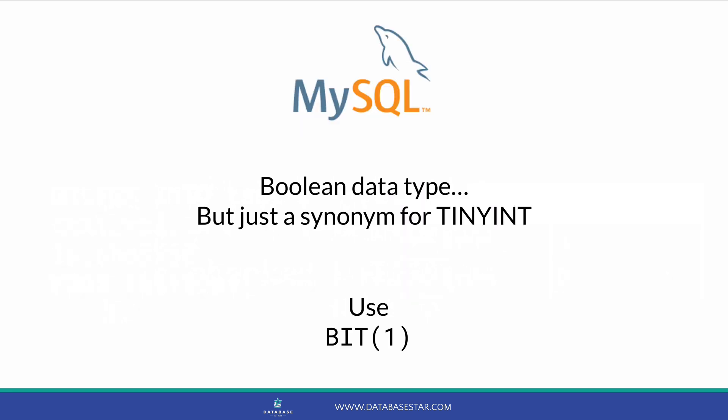In MySQL there is a Boolean data type. However, it's just a synonym or another name for the tinyInt data type, which is a type of number field. This means you can use it like a Boolean where you store 1 or 0. However, you will need to add a check constraint to ensure other digits aren't allowed. Another way to do it is to use a bit field. This works in the same way as SQL Server, where the bit field is used to store a value from 1 to 64 in the format of 1s and 0s. So you can have a bit field with one digit and it can store either 1 or 0 without a check constraint.